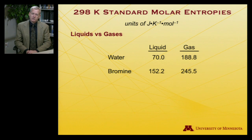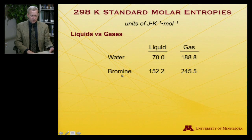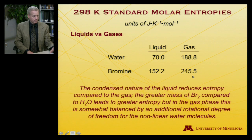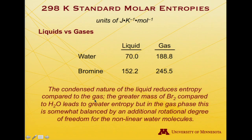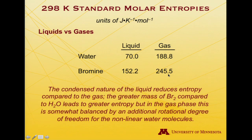Let's compare liquids to gases. Looking at water or bromine, both of which can readily be liquid or gas at 298 Kelvin, the liquid forms have substantially lower entropies than the gaseous forms. That simply reflects the condensed nature of the liquid reducing its entropy — there's less disorder when everything is condensed as opposed to filling a large volume. Bromine, irrespective of phase, has substantially higher entropy than water, and most of that is associated with the greater mass of bromine.